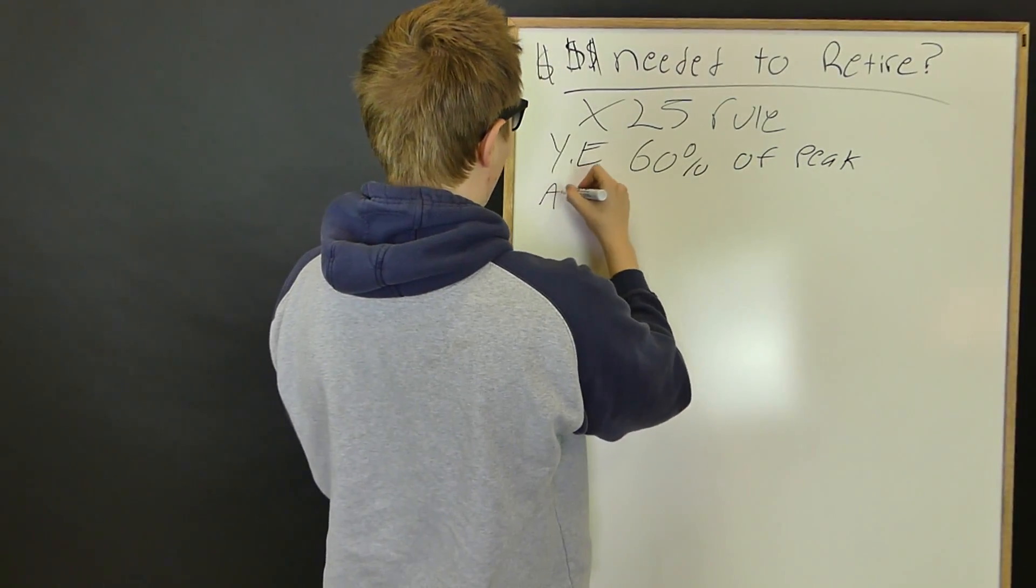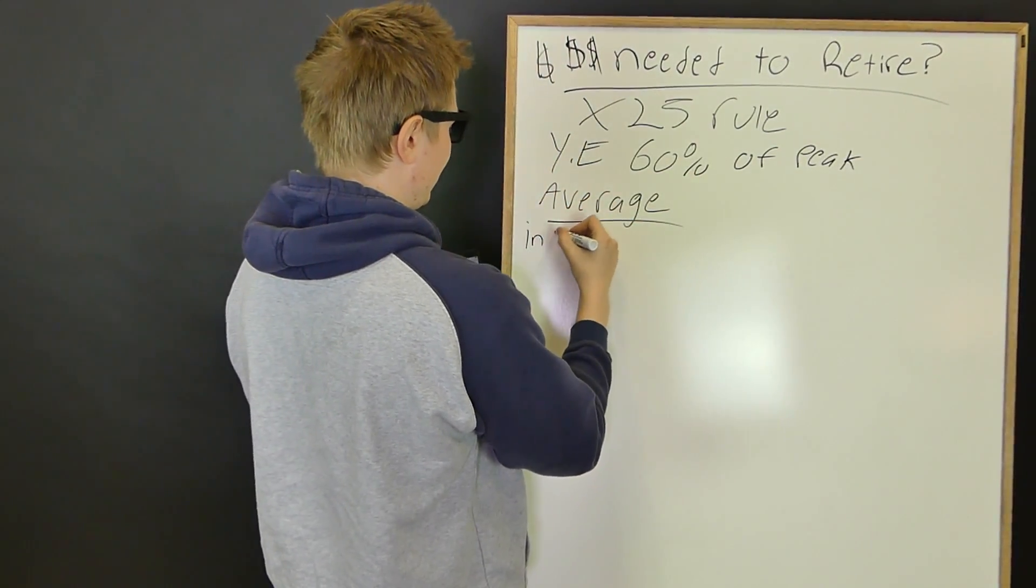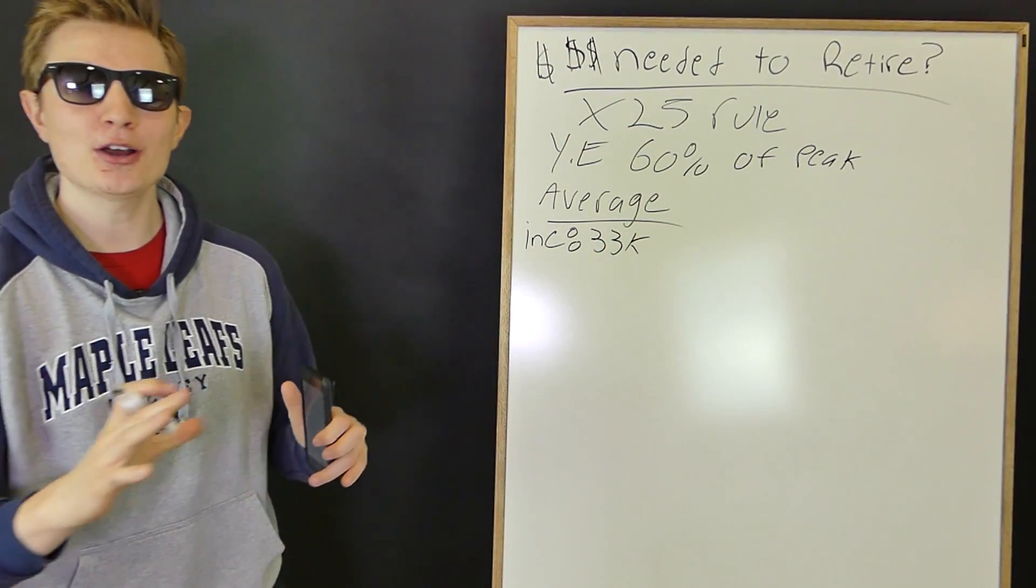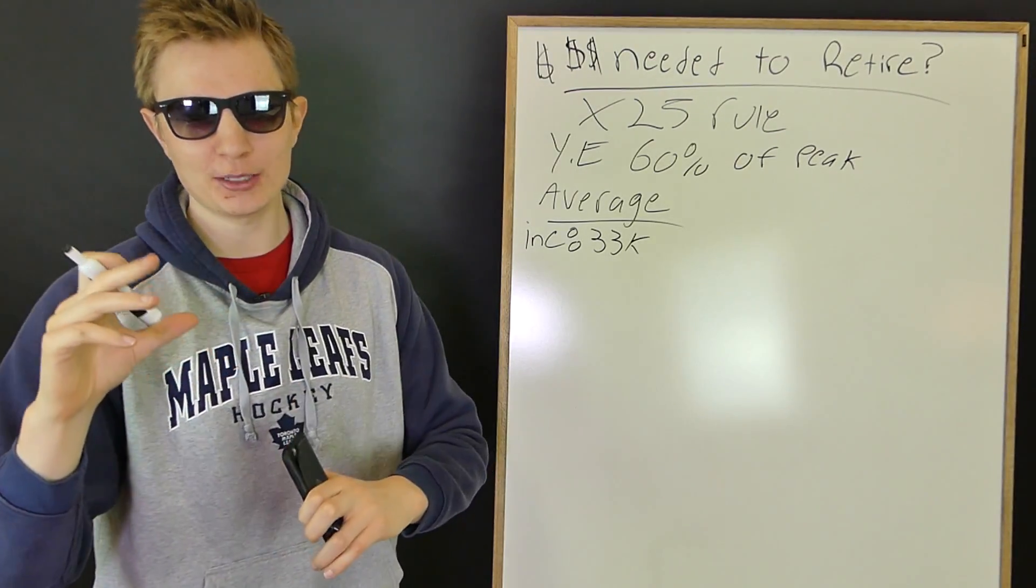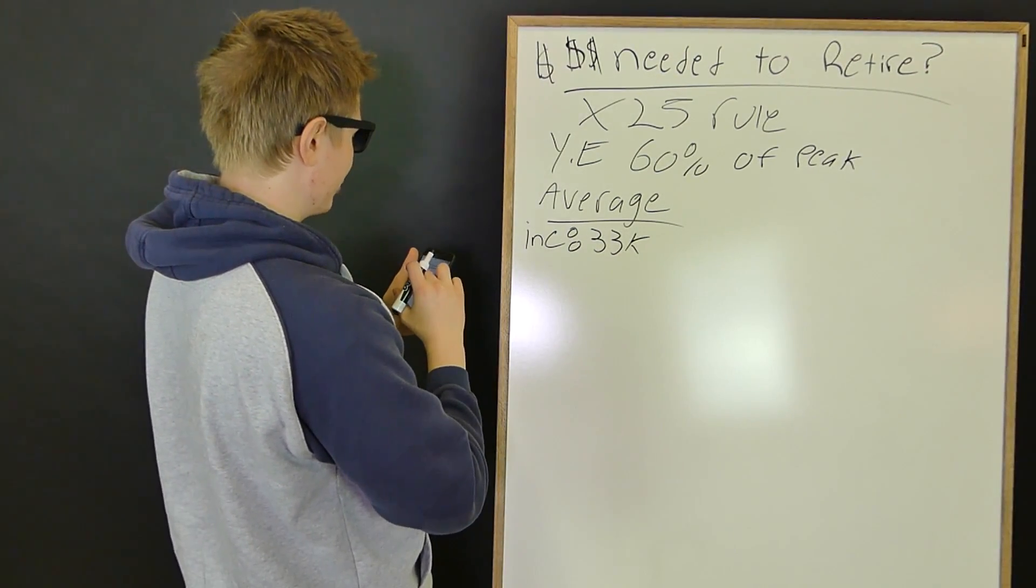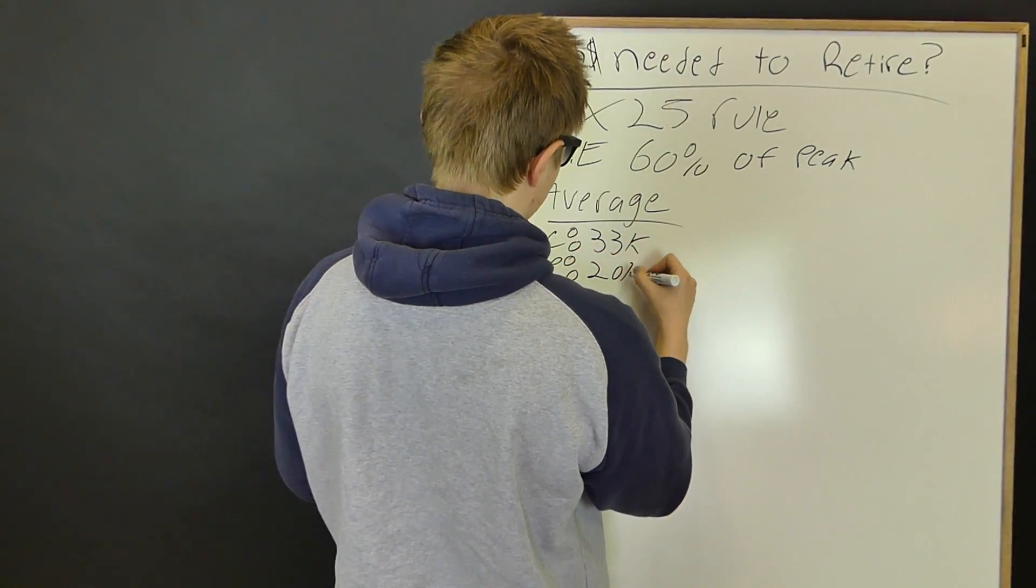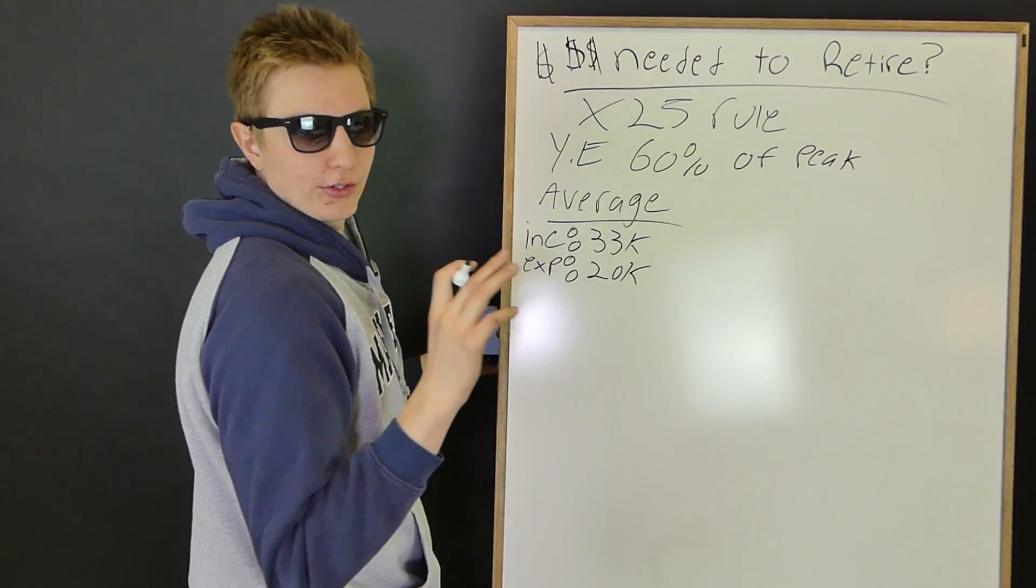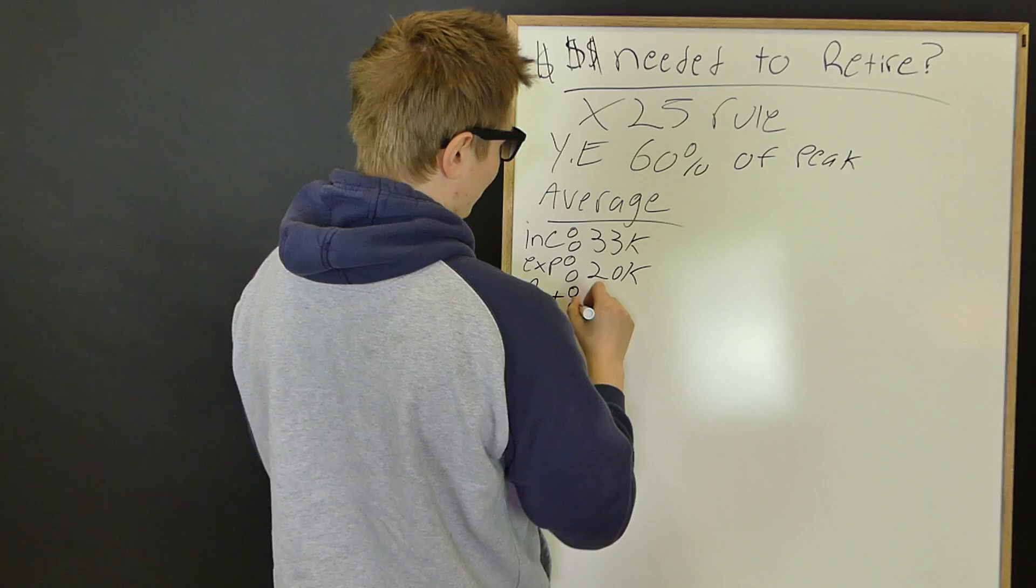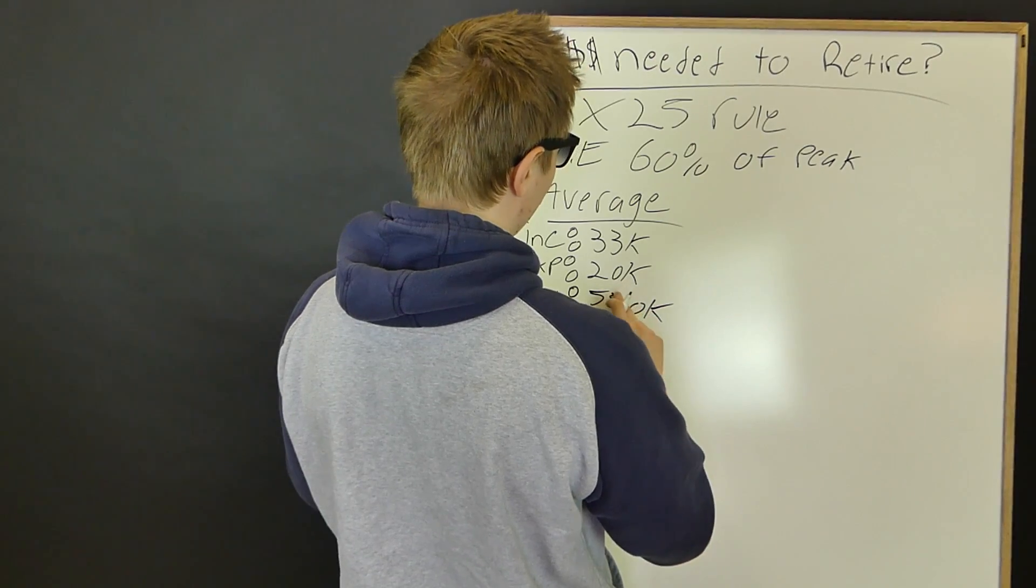So the average person income is $33,000. People don't realize that the average household income, I'm talking for retirement for one person, not for two people. For one person, the average personal income is $33,000, which would mean that their expenses is roughly $20,000. I'm just going to make it rough, it's roughly 60%. So when you take the times 25 rule, the amount of retirement money you should have saved up is roughly $500,000.